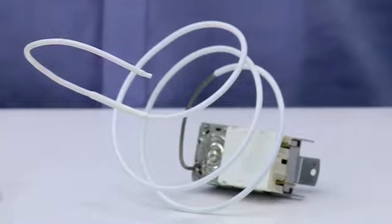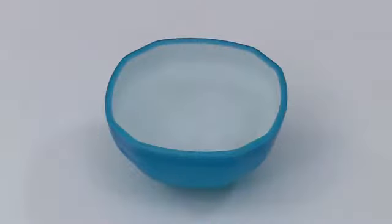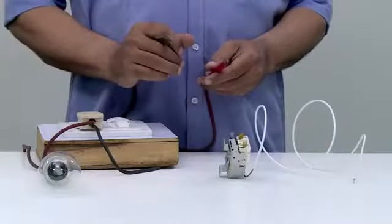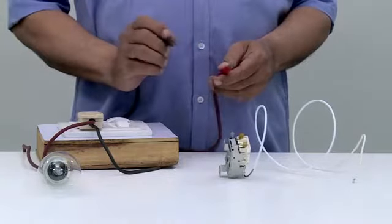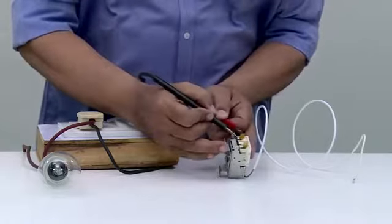Let's test the mechanical thermostat. For its testing, we require a powered test lamp and crushed ice in a bowl. As we check, continuity in this thermostat contacts is present as the bulb glows.